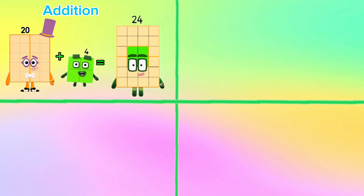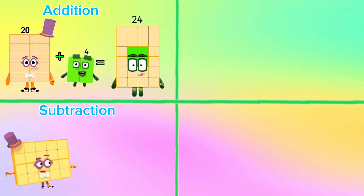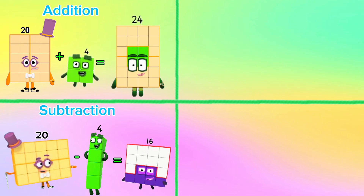Let's try another example. 20 plus 4 is equals to 24. In subtraction, 20 minus 4 is equals to 16.